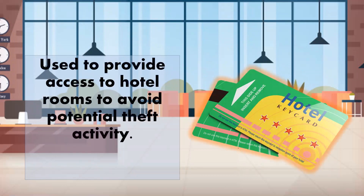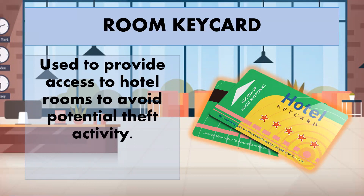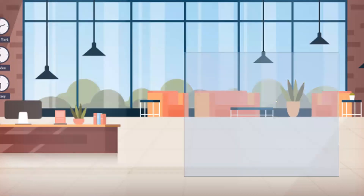Next — as written in the picture, this is called the room keycard. This is used to provide access to hotel rooms and to avoid potential theft activity. In modern hotels, the traditional key rack is no longer used because guests no longer use physical keys. Instead, they use the keycard. It is similar in size to an LRT ticket. You tap it on the door sensor or insert it into the doorknob to open the door.